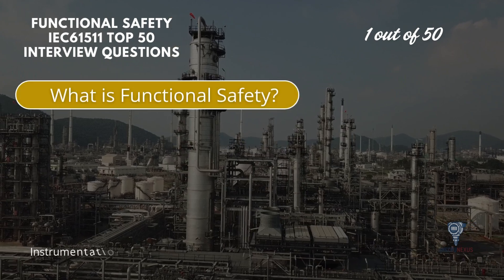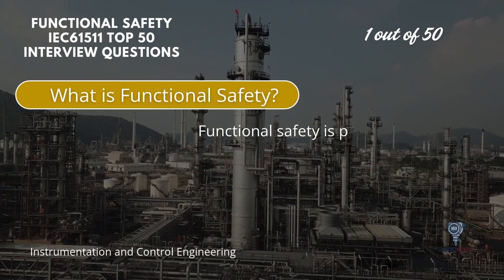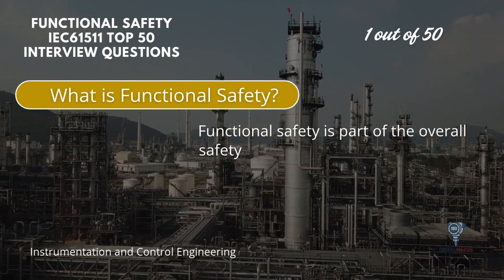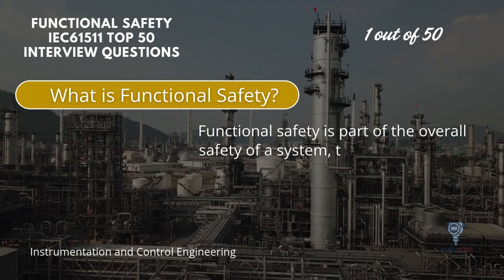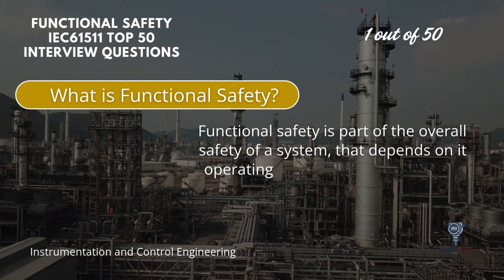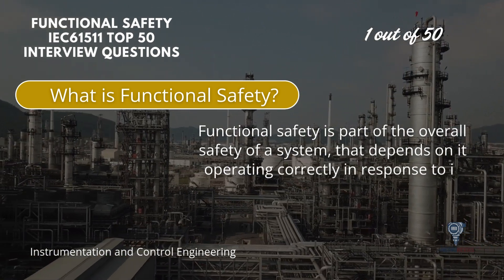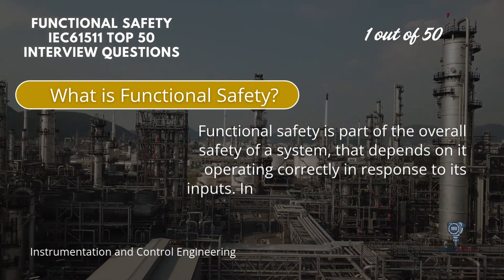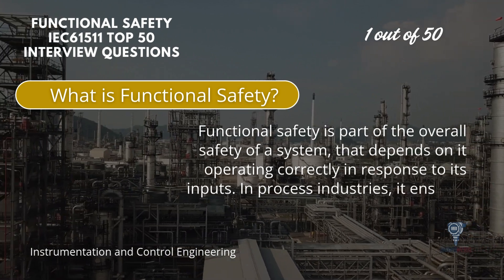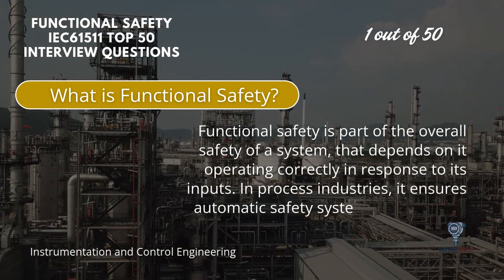What is functional safety? Functional safety is part of the overall safety of a system that depends on it operating correctly in response to its inputs. In process industries, it ensures automatic safety systems act correctly during hazardous events.